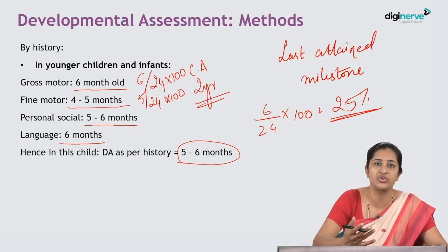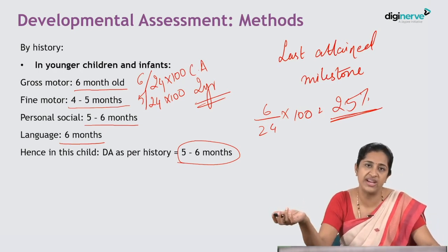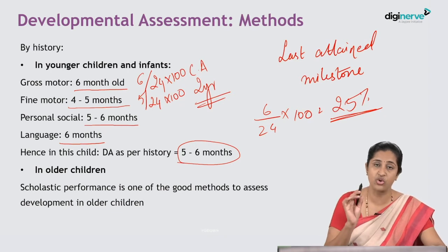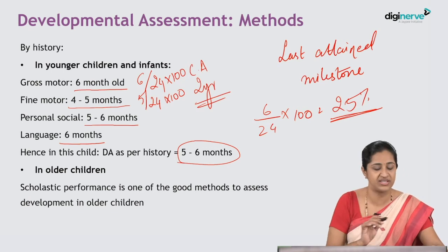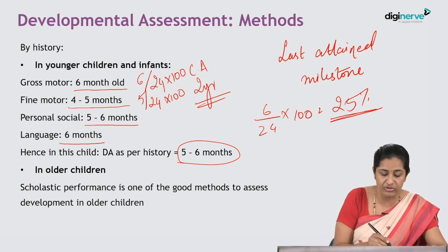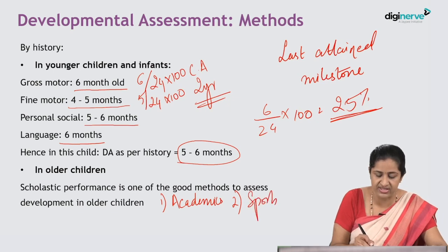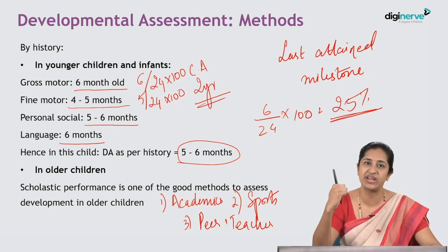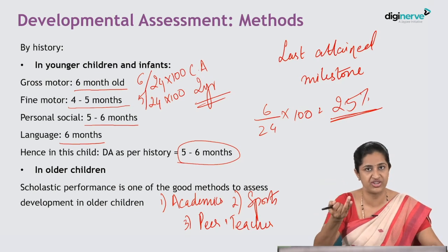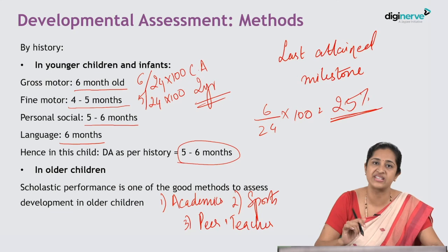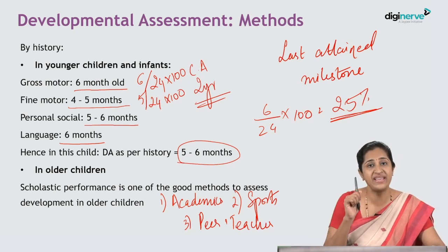This method is for smaller children and infants. For older children, you cannot ask the mother about when the child rolled over eight years back, so there the scholastic performance — the school performance of the child — is very important. When you assess school performance, you assess three things: first, academics, including language and calculation; second, sports and extracurricular activities; and third, peer and teacher relationships. These are the three things you assess in scholastic performance — how the child is studying, how the child performs in sports and extracurricular activities, and the child's relationships with peers, friends, seniors, and teachers.